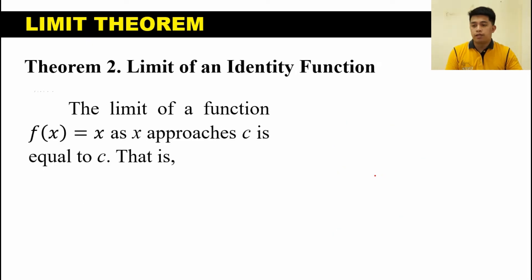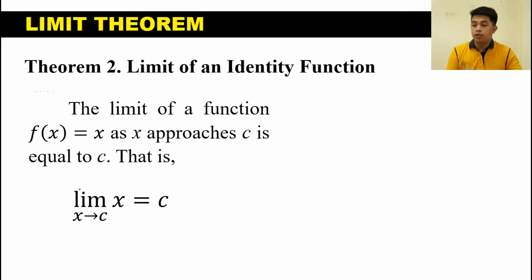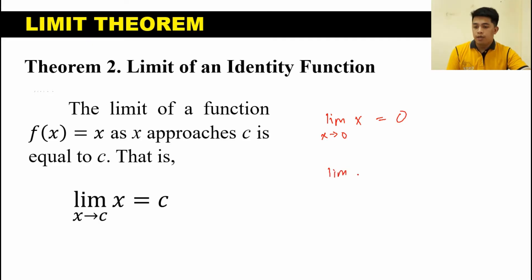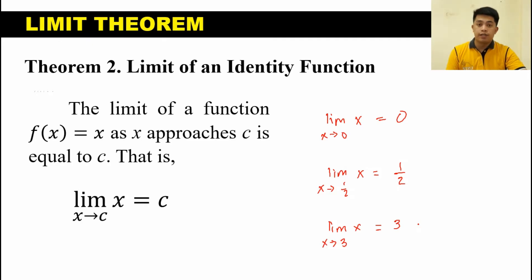Let's move on to another theorem called the limit of an identity function. This theorem states that the limit of a function f of X equals X as X approaches C is equal to C. In symbols, the limit of X as X approaches C equals C. For example, the limit of X as X approaches 0 is 0. The limit of X as X approaches 1 half is equal to 1 half. The limit of X as X approaches 3 is equal to 3.